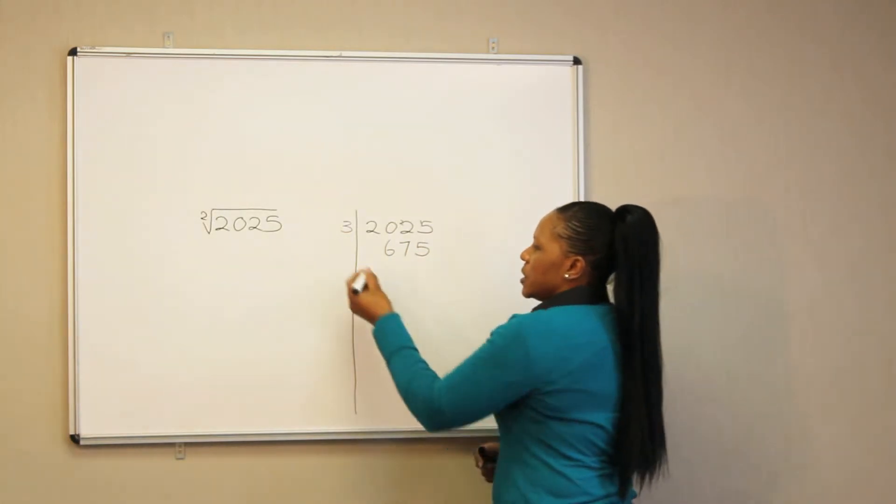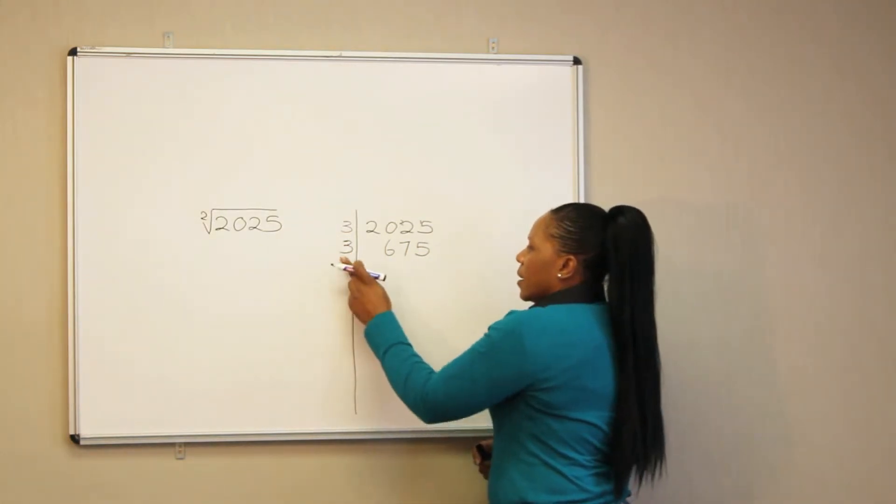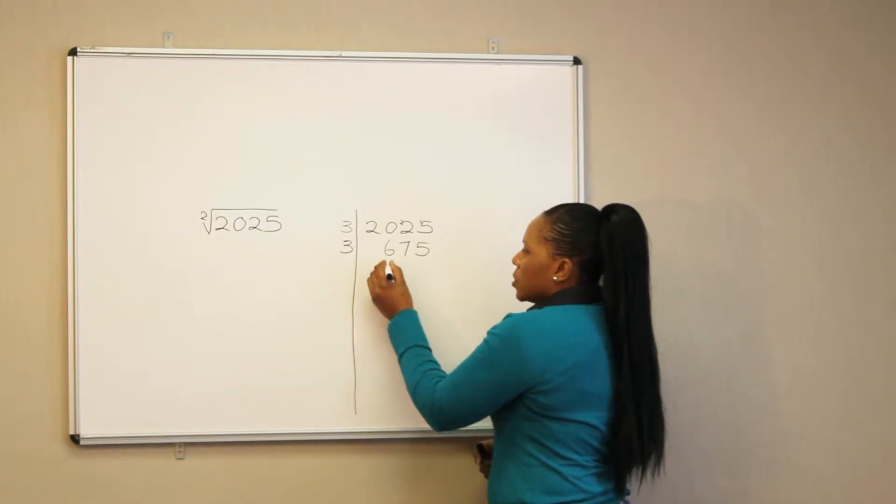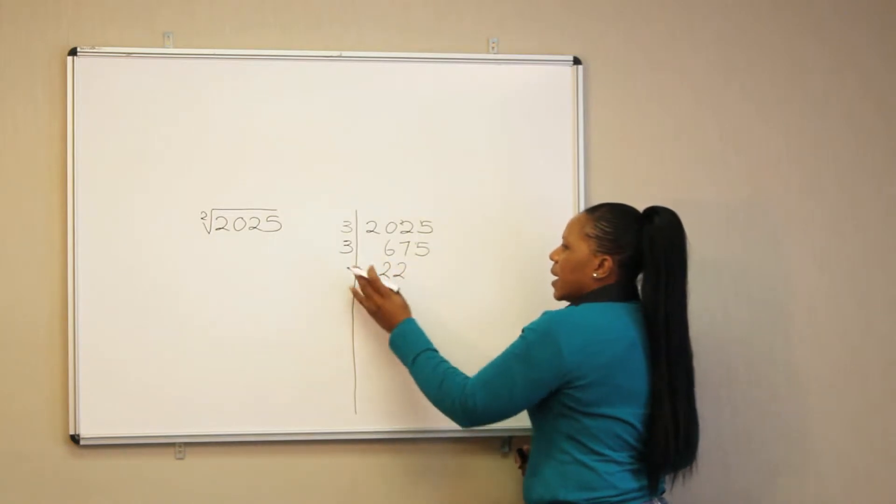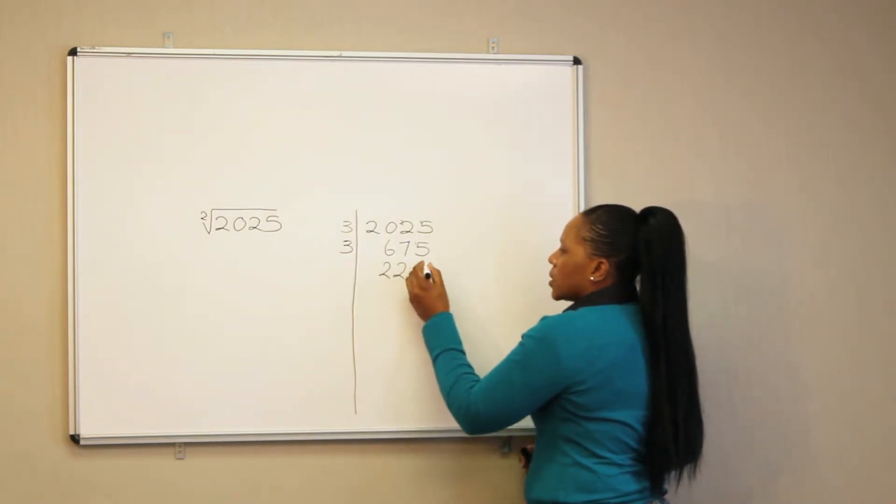Still 3 can go into 675. 3 into 6 goes 2 times. 3 into 7 goes 2 times, remainder 1. 3 into 15, it goes 5 times.